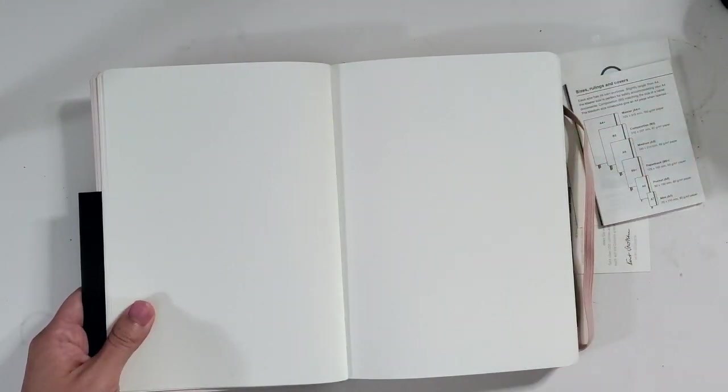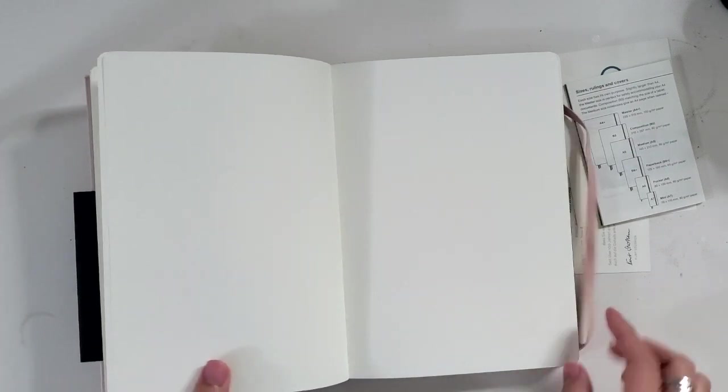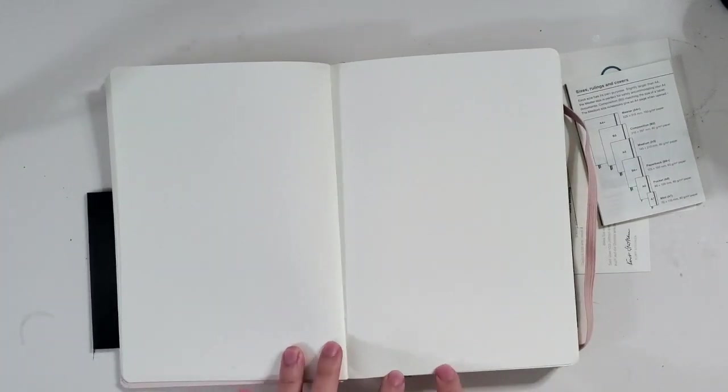And this is when you get into the pages. You can't maybe see this, but on the bottom, it's really light. What I appreciate about this notebook is that the dots are not super dark. So it's really light. And on the bottom is the page number right in the middle.